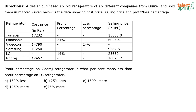You have to find out the profit percentage of the Godrej refrigerator and the profit percentage of the LG refrigerator, and then compare both. The profit percentage of the LG refrigerator is already given as 14%. If you look at the LG table, they have given profit percentage as 14, so you don't need to calculate anything there. Its value is already given.